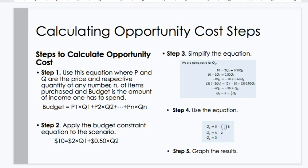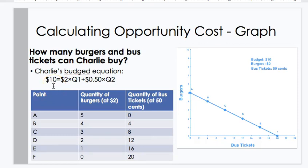Step 2: apply the budget constraint equation. We know there's $10 of the budget. Substitute that in for budget: $10 equals $2 — the price of a burger — times Q1 (how many burgers are consumed), plus $0.50 for bus tickets times Q2 (quantity of bus tickets). Step 3: simplify the equation and solve for Q1. You end up with Q1 equals 5 minus one-fourth Q2. Q1 is the amount of burgers; Q2 is the amount of bus tickets. Step 4: use the equation Q1 equals 5 minus one-fourth times Q2 — substituting in values — and you can graph the results.